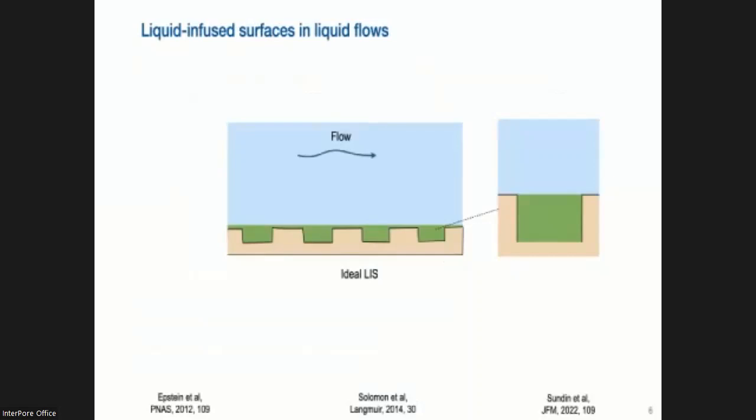So an LIS is basically a lubricant that is locked in a microstructure. And we're interested when these material surfaces are exposed to a fluid flow. So they have certain properties, these materials. For example, they have a slippery interface. So this gives the surface an anti-fouling function. So bacteria do not like to sit on liquid-liquid interfaces often, compared to solid surfaces.